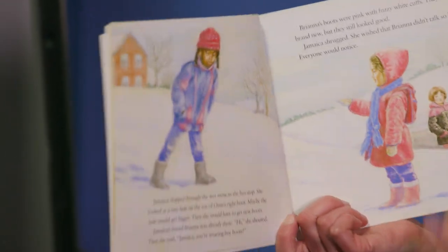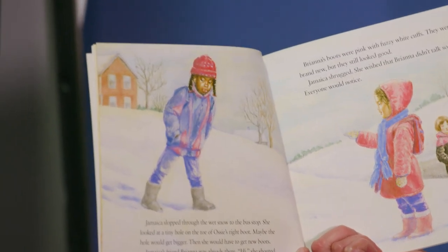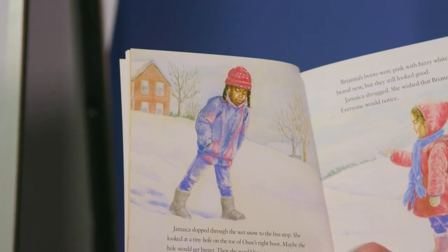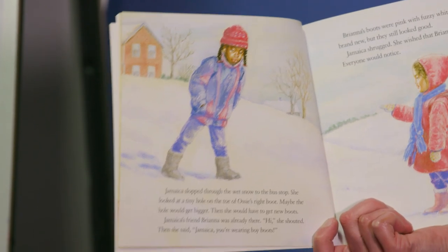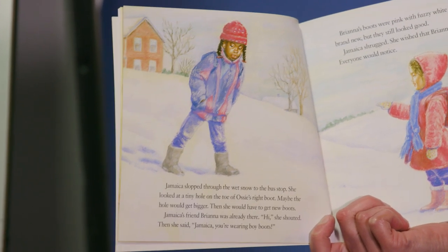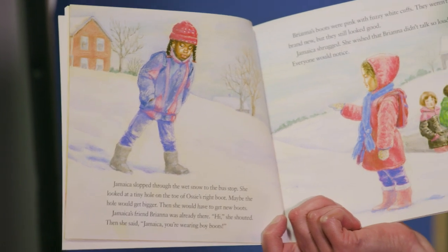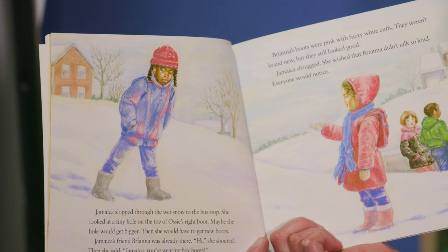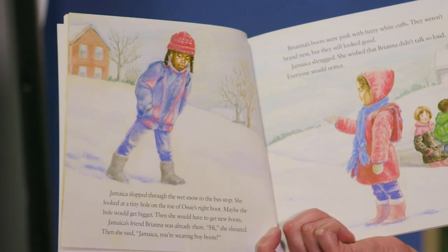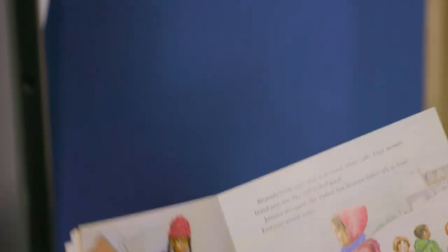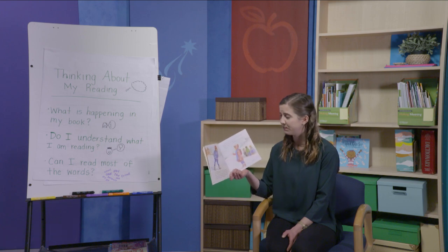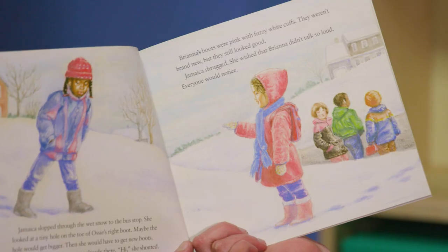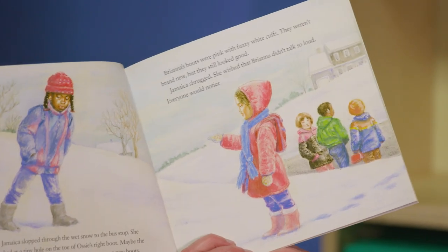'Jamaica slopped through the wet snow to the bus stop. She looked at a tiny hole on the toe of Aussie's right boot. Maybe the hole would get bigger. Then she would have to get new boots. Jamaica's friend Brianna was already there. Hi, she shouted. Then she said, Jamaica, you're wearing boy boots.' I'm going to stop there. What is happening in my book? It seems like Jamaica's friend Brianna was making fun of her boots — she was saying those are boy boots. I visualize Jamaica feeling sad.